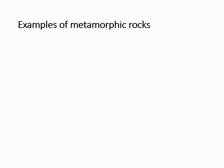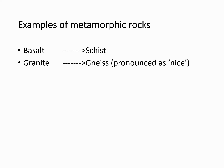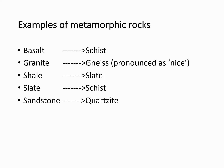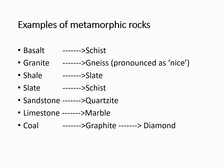Let's look at some examples of metamorphic rocks. When basalt is metamorphosed, the rock formed is schist. When granite is metamorphosed, the rock formed is gneiss. When shale is metamorphosed, it becomes slate. If slate is further subjected to heat and pressure, it may convert into schist. Sandstone, when metamorphosed, gives rise to quartzite. Limestone is metamorphosed to marble. Coal, when subjected to heat and pressure, may change into graphite.